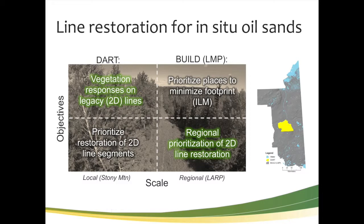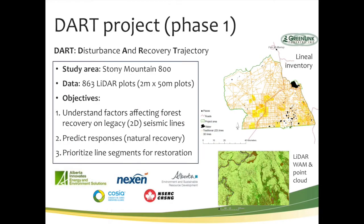In the DART project, we looked at a local scale with a smaller study area southwest of Fort McMurray in the Stony Mountain area, and then across the lower Athabasca south of Lake Athabasca, scaling up to look at where areas would be prioritized for restoration efforts. We first had to understand the initial responses of woody vegetation on these legacy disturbances.